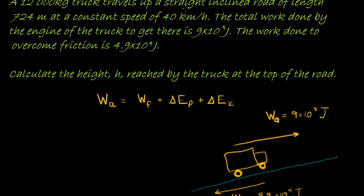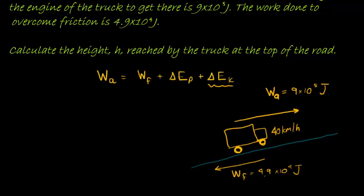What else do we know? It's traveling at constant velocity of 40 kilometers per hour. Constant velocity tells me that the change in kinetic energy is zero. It's not changing kinetic energy, so the work being applied is exactly equal to these two terms. There is no change in kinetic energy—that's going to be zero.